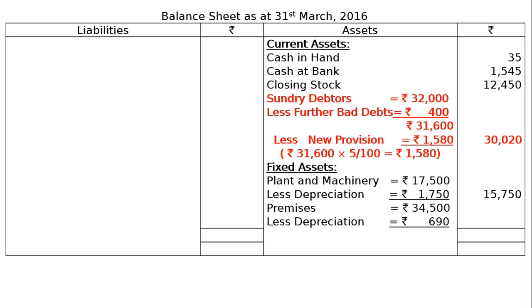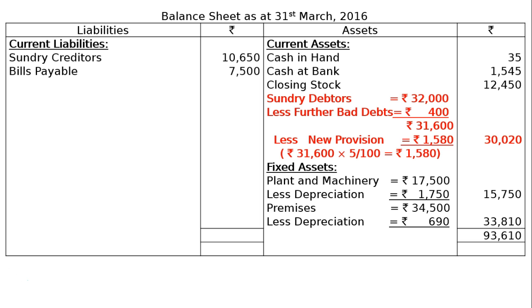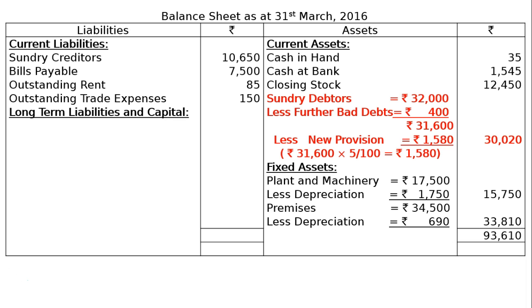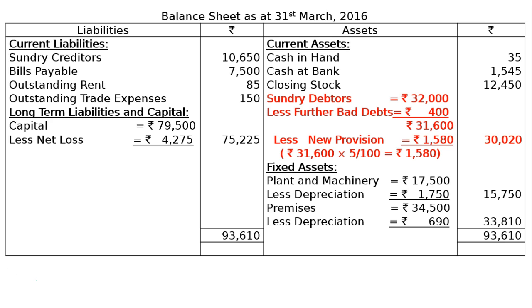The final column for fixed assets gives rupees 33,810 and total assets come to rupees 93,610. On the Liabilities side: Current Liabilities — Sundry Creditors rupees 10,650; Bills Payable rupees 7,500; Outstanding Rent rupees 85; Outstanding Trade Expenses rupees 150. Long-term Liabilities and Capital: Capital rupees 79,500 less Net Loss gives net capital of rupees 75,225. The liabilities side totals rupees 93,610, confirming the Balance Sheet balances.